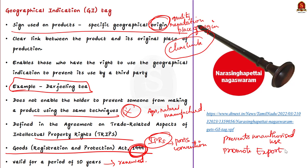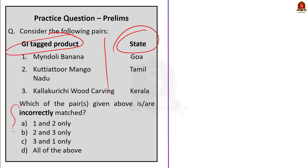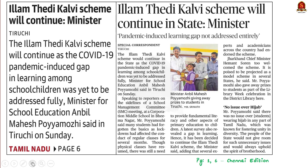In India, geographical indications registration is administered by the Geographical Indications of Goods (Registration and Protection) Act, 1999. Registration is valid for a period of 10 years and can be renewed for further periods of 10 years each. Having a GI tag prevents unauthorized use of a registered geographical indication, boosts exports, and enables seeking legal protection in other WTO member countries. Try to remember recently GI-tagged products and products from your own state to help eliminate options in the preliminary exam.